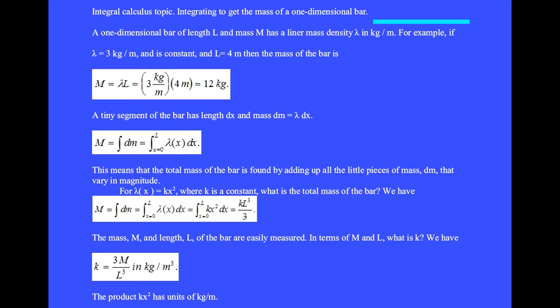A one-dimensional bar of length L and mass M has a linear mass density lambda in kilograms per meter. For example, if lambda equals 3 kilograms per meter and is constant and L equals 4 meters, then the mass of the bar is M equals lambda times L equals 3 kilograms per meter times 4 meters equals 12 kilograms.